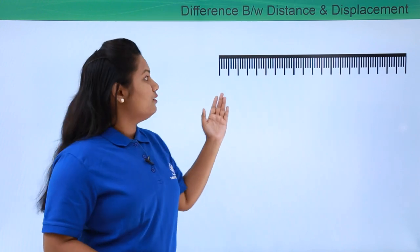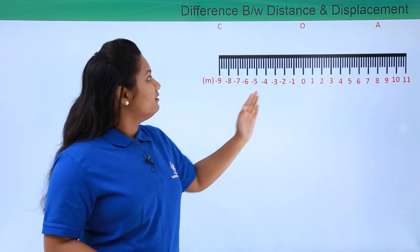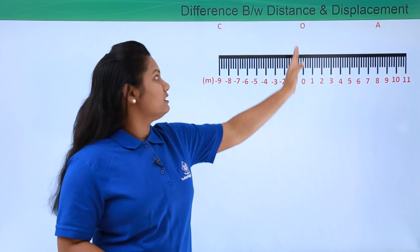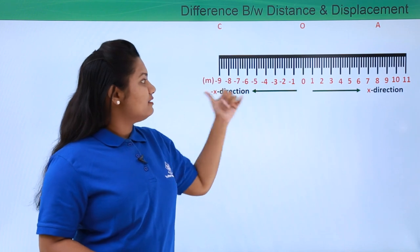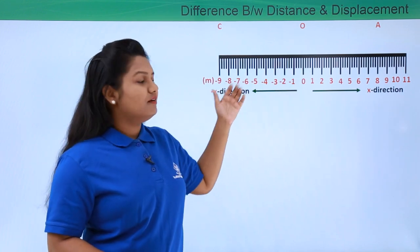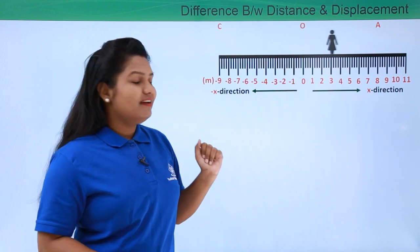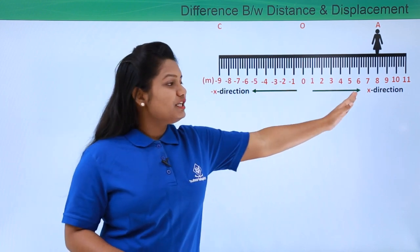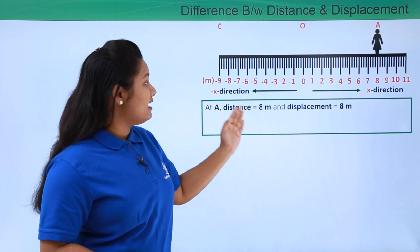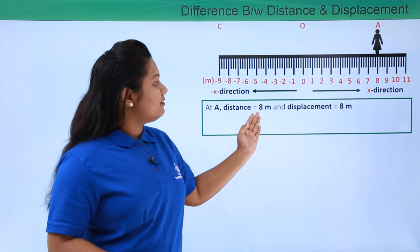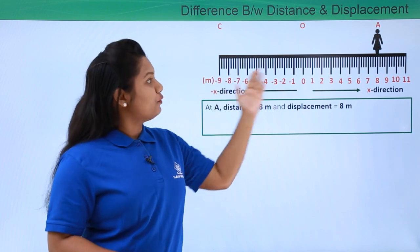Let's say there is a straight road which I have graduated in terms of meters. This is our reference point, that is point O. This is the positive x direction, and this is the negative x direction. Let's say a girl moves from point O to point A and reaches eight meters ahead of O, which is point A. At this point, the distance that she has travelled is eight meters, and the displacement is also equal to the distance, which is eight meters, since the road is a straight one.